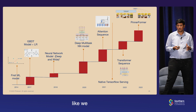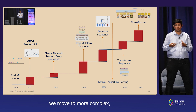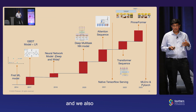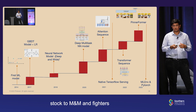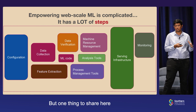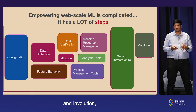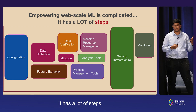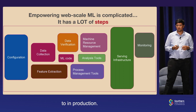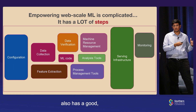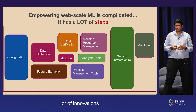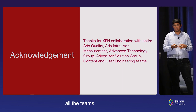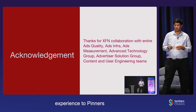As we move across all these dimensions, we started with simple models, moved to more complex models, more recently moving to GPU serving with these architectures around long sequences. We also recently migrated training machine learning infrastructure to MLM and PyTorch. Today I only shared about the architecture and evolution — how the architecture went from simple to complex models. But empowering web-scale ML is much more complicated; it has a lot of steps. To bring these innovations in production, we had to ensure that Pinterest also has good building blocks to build these models, and there are a lot of innovations that happen across the full stack. I also want to take this opportunity to acknowledge all the teams working hard to bring the best experience to Pinners. Thank you.